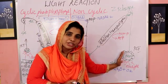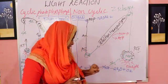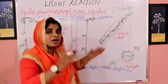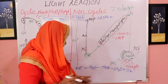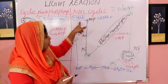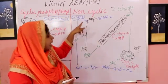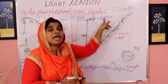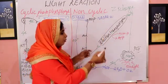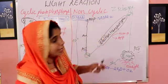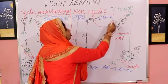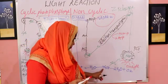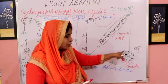P680 has an electron deficiency, so water splitting reaction occurs. Water splits and releases 4H+ and oxygen. NADP is reduced to NADPH2. Then the electrons from P700 reduce NADP.